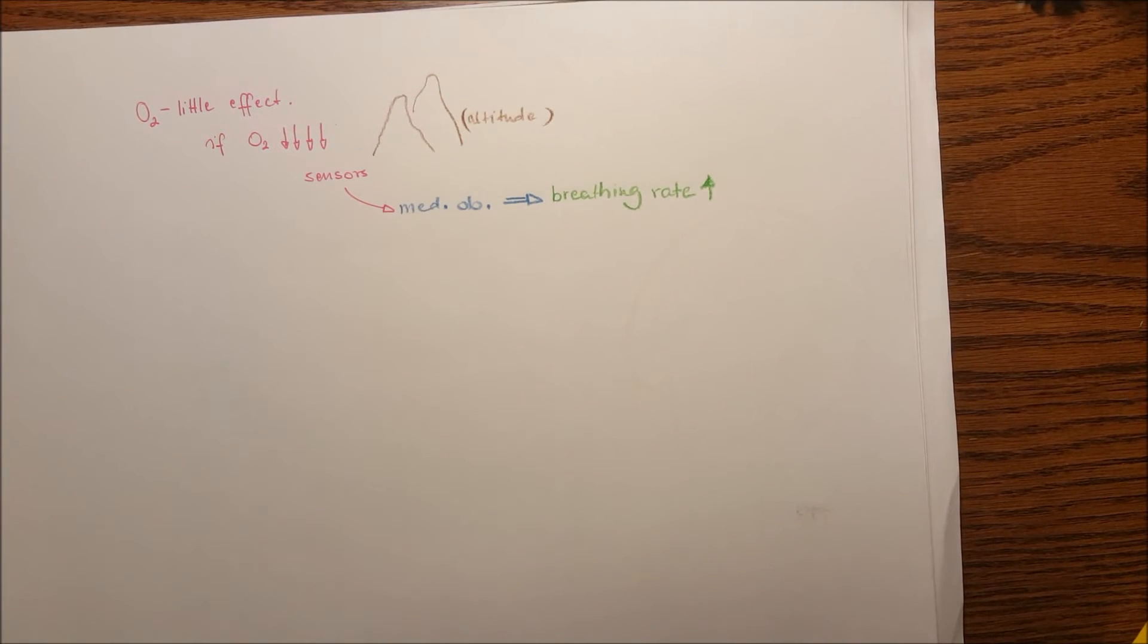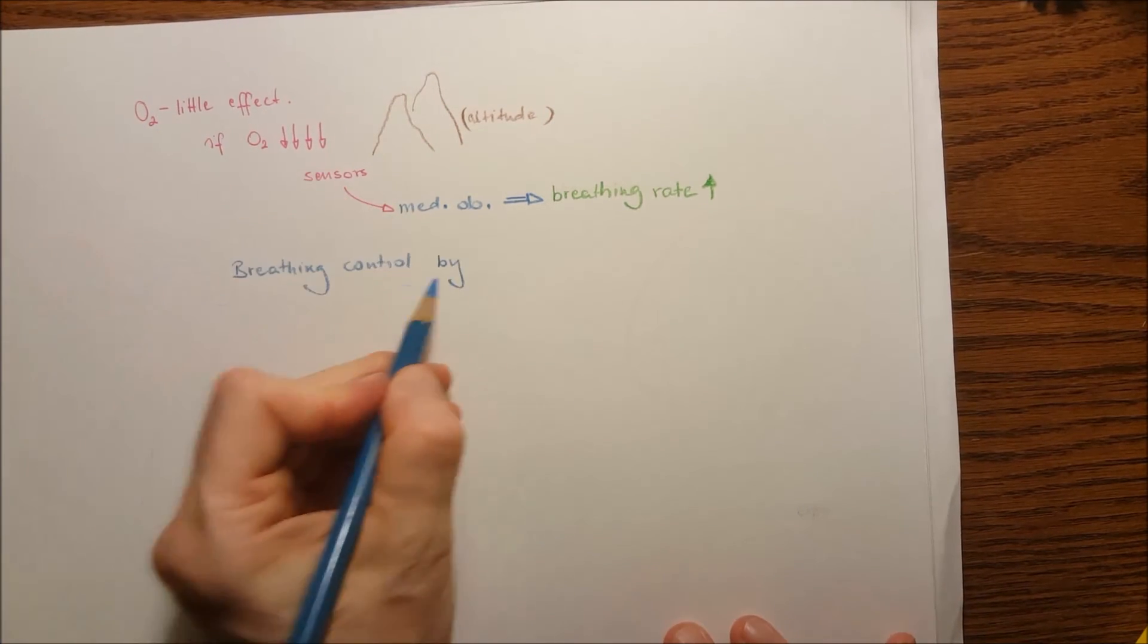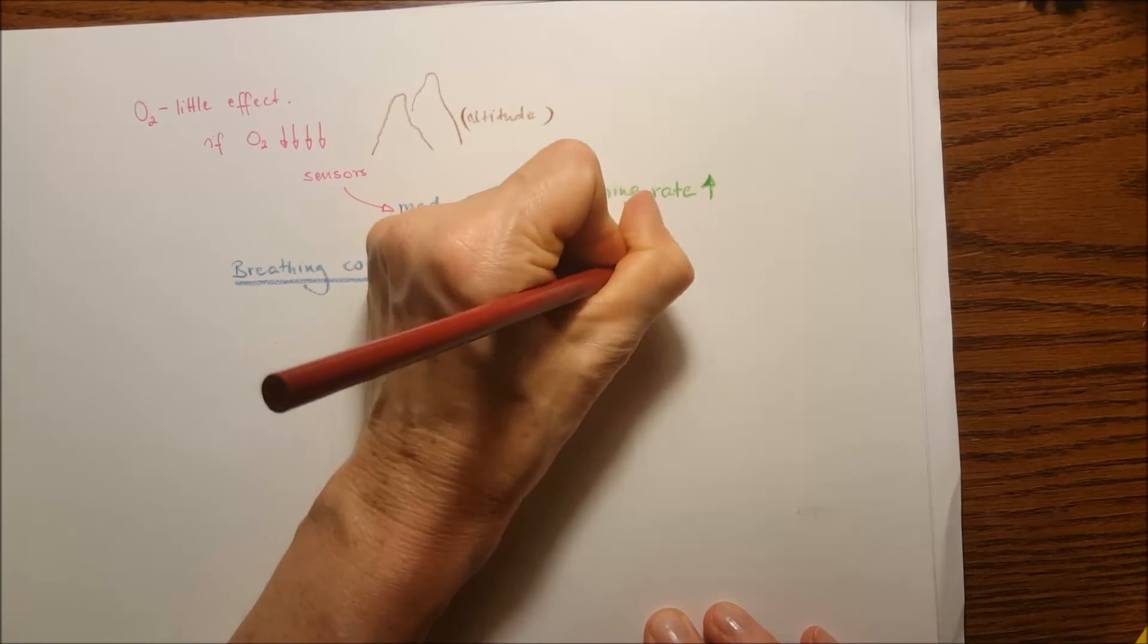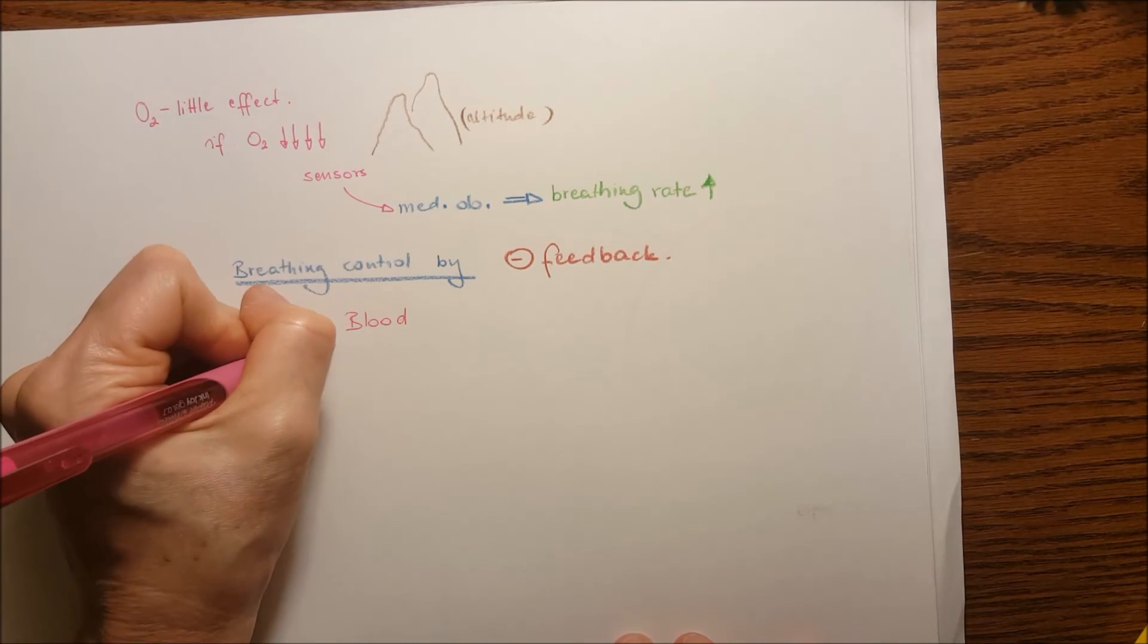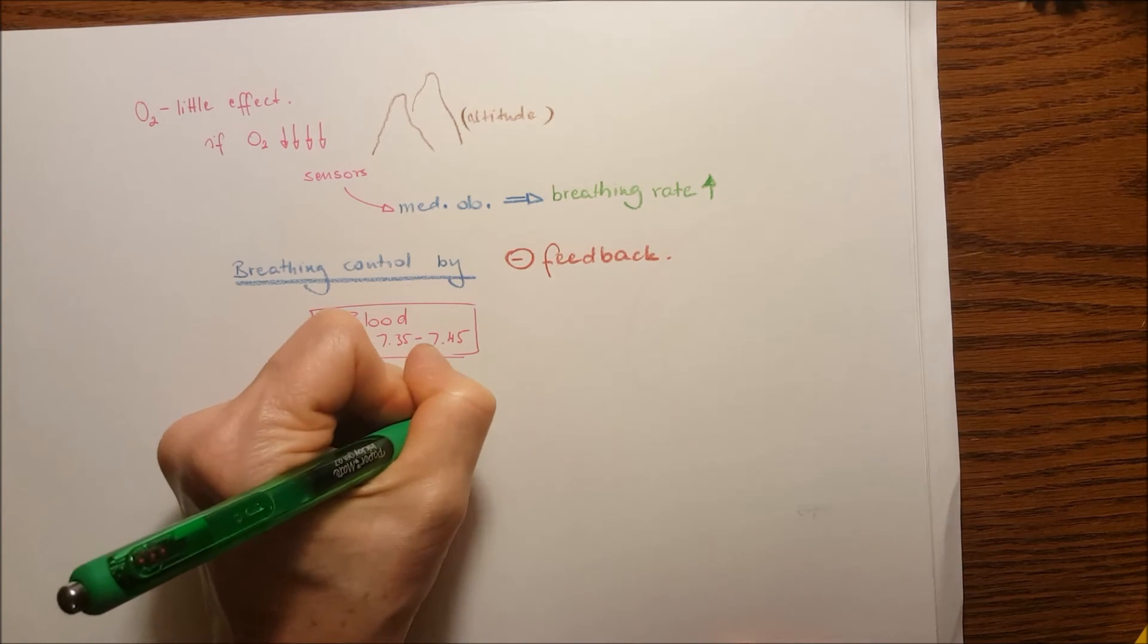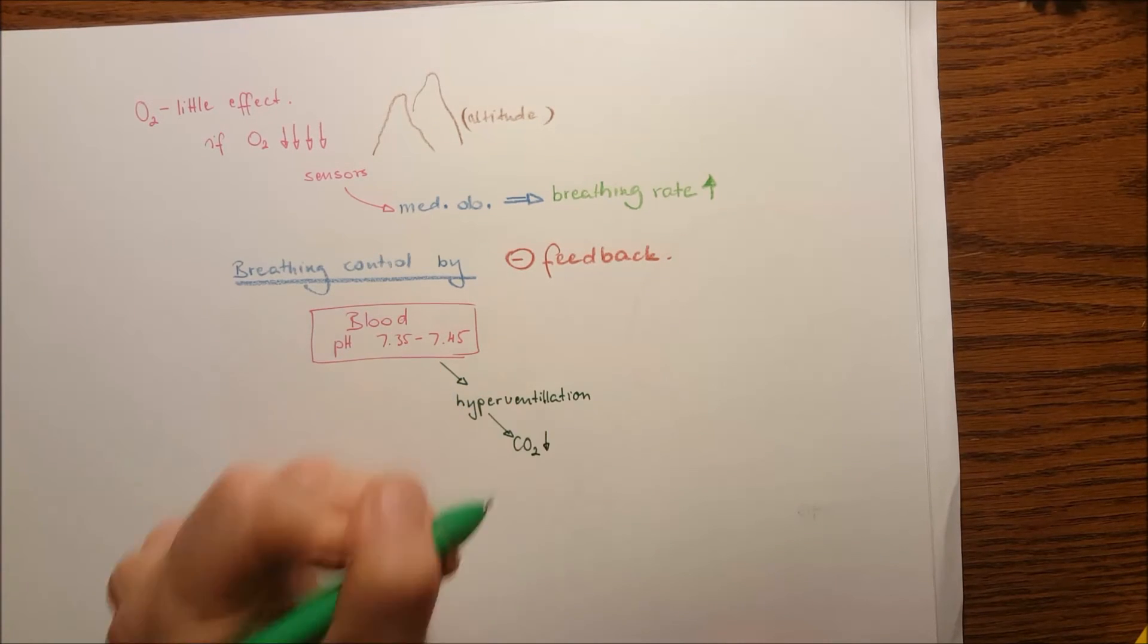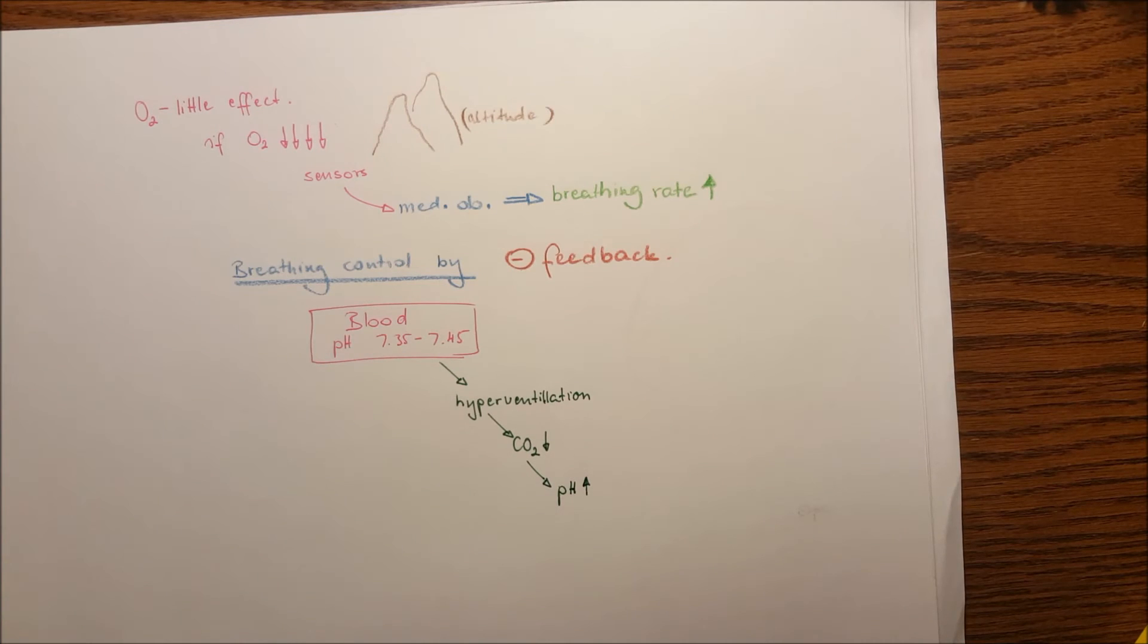As general, how is the breathing controlled? This is controlled by negative feedback. This is a beautiful negative feedback mechanism. The normal blood pH is between 7.35 through 7.45. If we hyperventilate, we will decrease the carbon dioxide concentration in the blood and that would increase the pH. So alkalosis will happen in the blood.